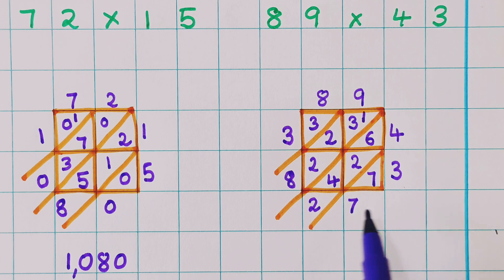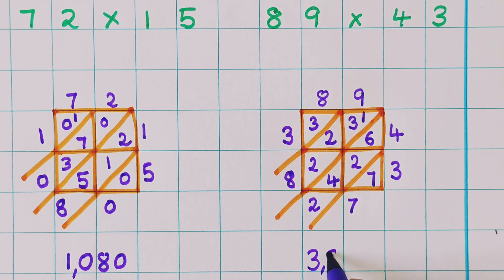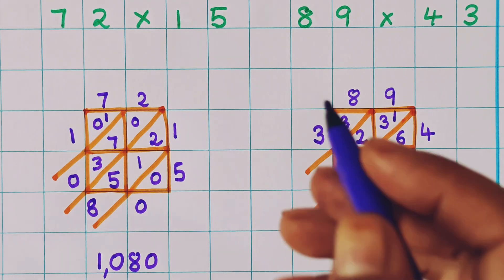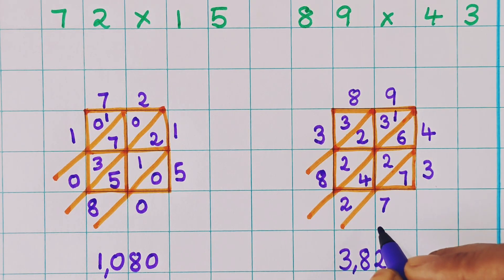3, 8, 2, 7. 3,827. I hope the lattice algorithm method is clear to you.